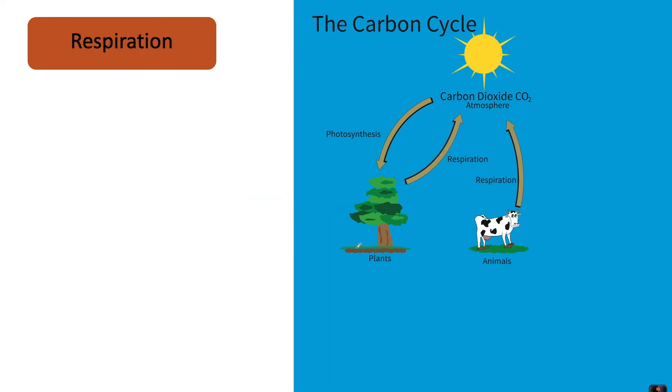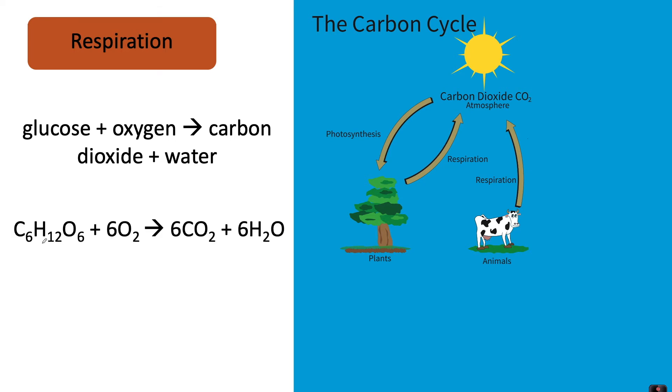Another process involved in the carbon cycle is respiration. The equation for respiration is glucose plus oxygen makes carbon dioxide plus water - the reverse of photosynthesis. This time, carbon in glucose reacts with oxygen, producing carbon dioxide and water.